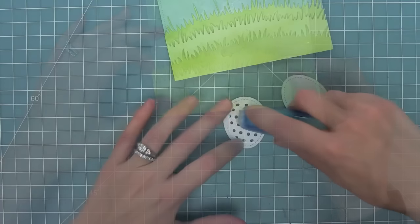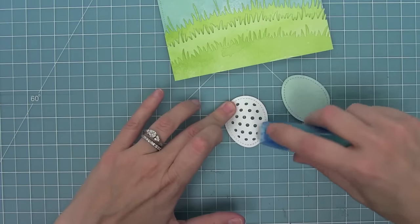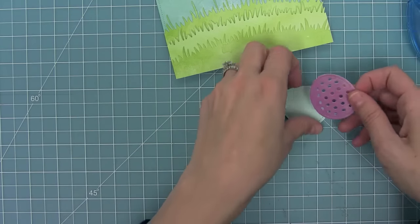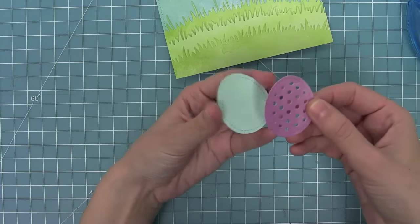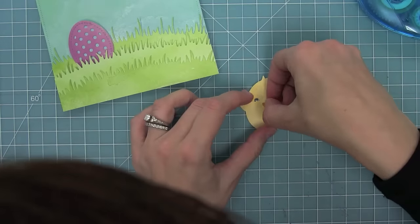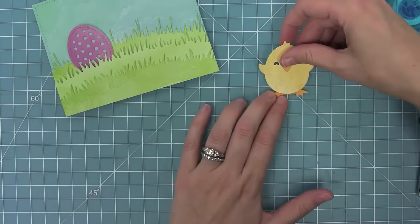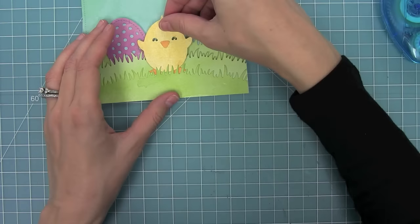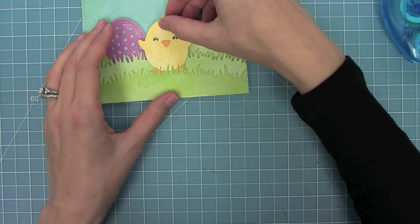Next up I'm going to take my polka dotted egg and layer it on top of a blue base egg to give it some nice color in the back of those polka dots. Then I can start layering my pieces for my chick so I'm going to add his little beak and his feet and then I can decide where everything's going to go on my card.